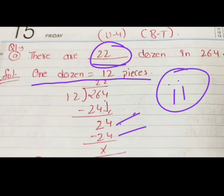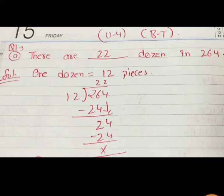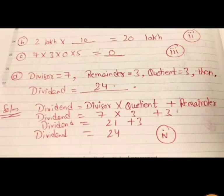So option number 2 is the right answer. Now next question, in B part, 2 lakhs is equal to dash, 2 lakhs multiply dash equal to 20 lakhs. So 2 lakhs ko kis se multiply karo ke 20 aaye? So that is 10. Option is 2.